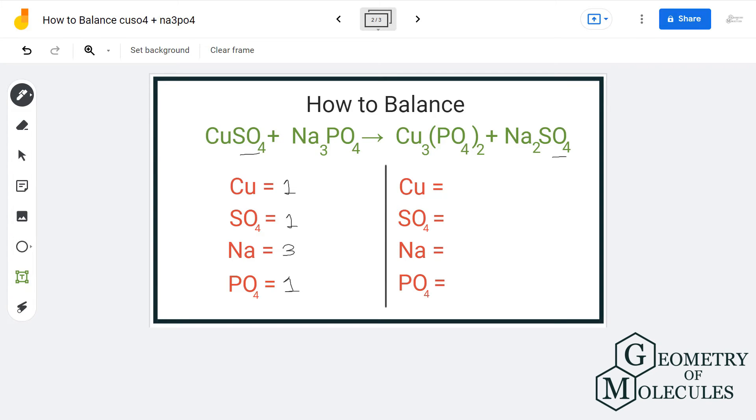Let us look on the product side. On the product side we have 3 copper, 1 sulfate, 2 sodium, and 2 phosphate ions.